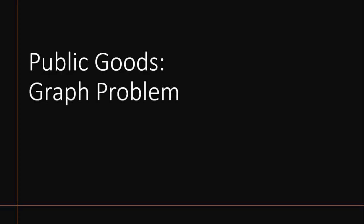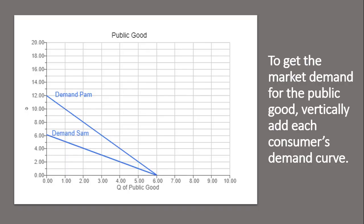Hello, in this video we're going to do a public goods graphical problem. So we have a public good here, Q, measured on the x-axis, and dollars measured on the vertical axis. We have two people, Sam and Pam, and here is Sam's demand for the public good and Pam's demand.